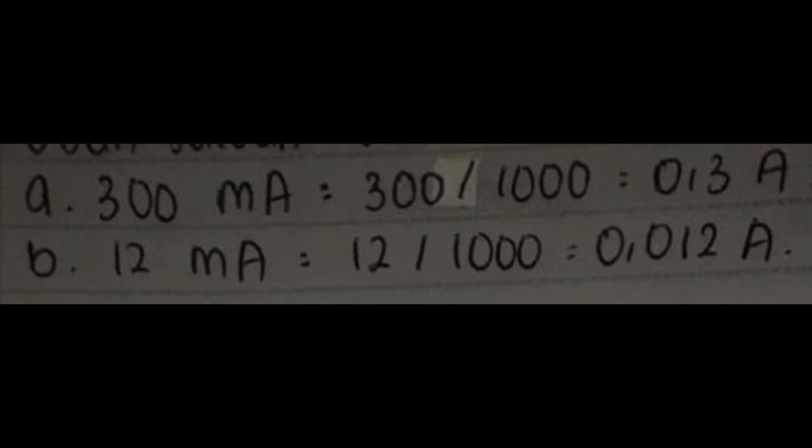Soal 14, ubah satuan berikut. A, 300 mA sama dengan 300 per 1000 sama dengan 0,3 ampere. B, 12 mA sama dengan 12 per 1000 sama dengan 0,012 ampere.